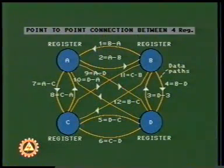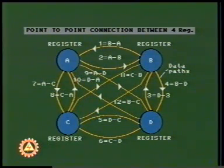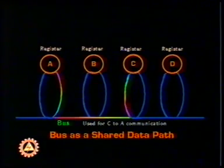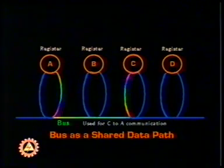Let us now understand the concept of a bus. The bus provides a communication path between various functional parts of a microprocessor. As an example, consider establishing connections among four registers. In a point-to-point dedicated connection, we need 12 connection paths — this is complex and uneconomical. A better alternative is to use a shared data path, whereby any two registers can utilize a common line or bus to exchange data.